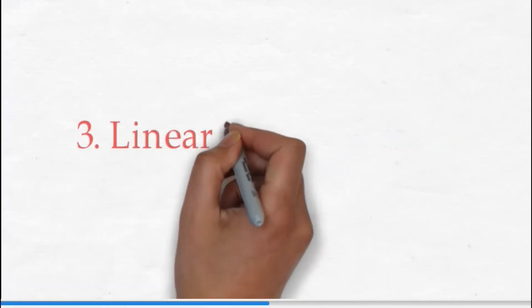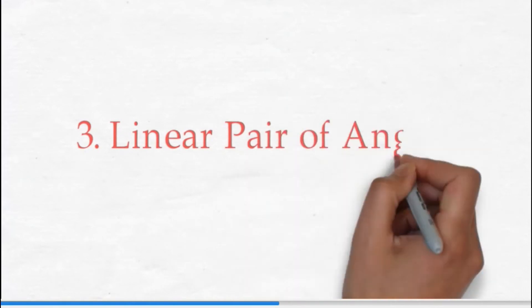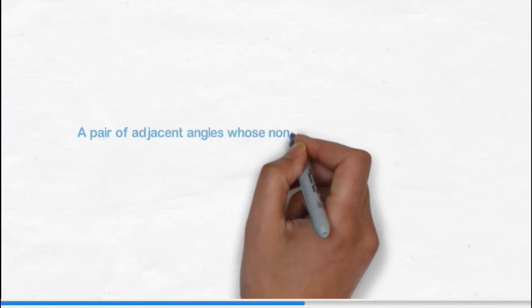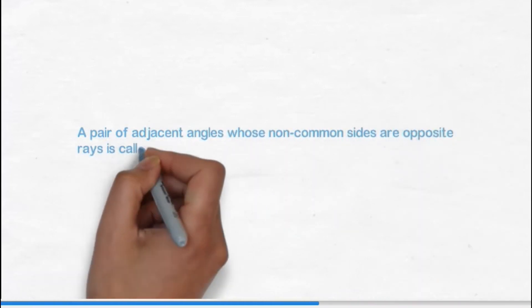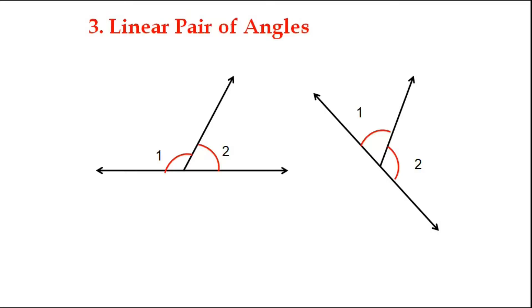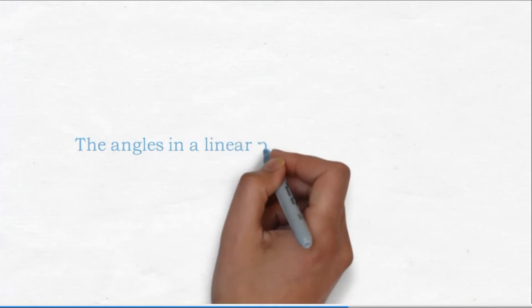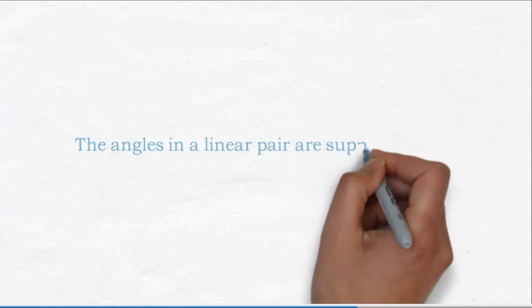Third: linear pair of angles. A pair of adjacent angles whose non-common arms are opposite rays is called a linear pair of angles. In both cases, angle 1 and angle 2 sum to 180 degrees, therefore they are called a linear pair of angles. Linear pair of angles are always adjacent. The angles in a linear pair are supplementary, meaning their sum is 180 degrees.